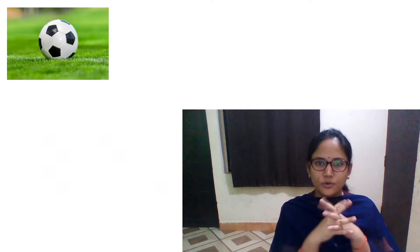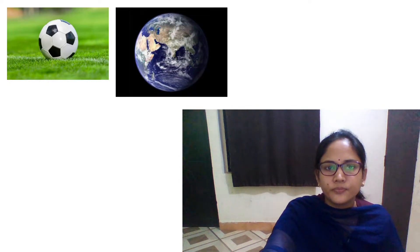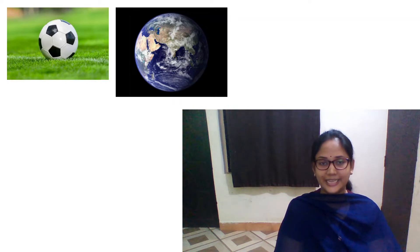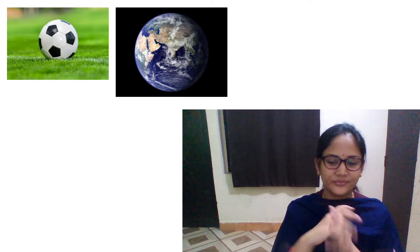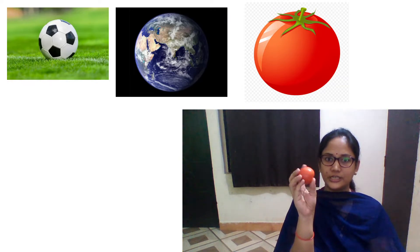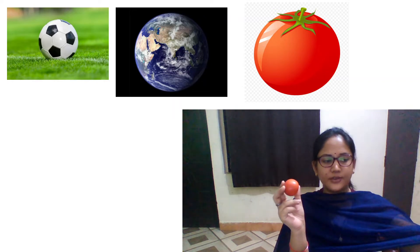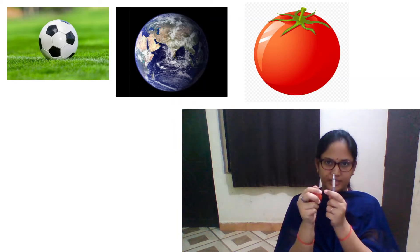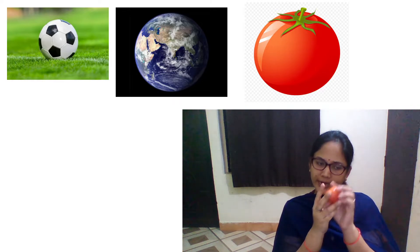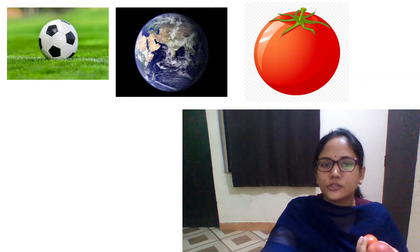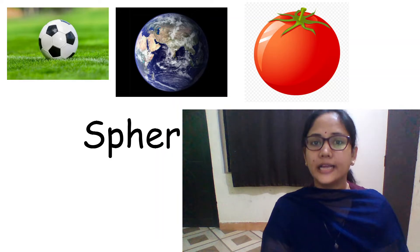Now let us see the next one. This is a football — you all love playing with balls. This is your earth where we live. And this is a tomato — a vegetable. Now this tomato is also deep; if I pierce it, it will go somewhere, so it is having depth. So I cannot call this a circle — it is not a 2D shape, it is a 3D shape. This tomato or this apple — round, round. This 3D shape is called a sphere — S-P-H-E-R-E.